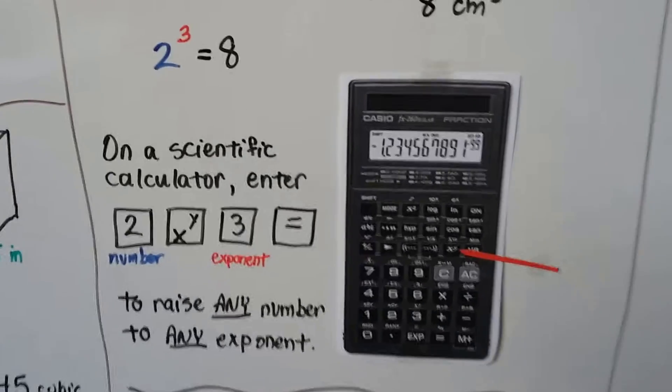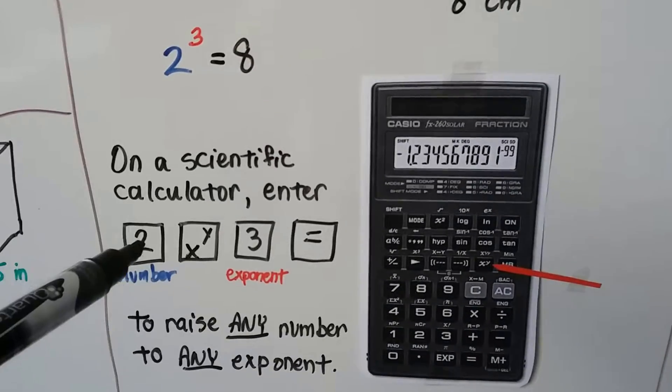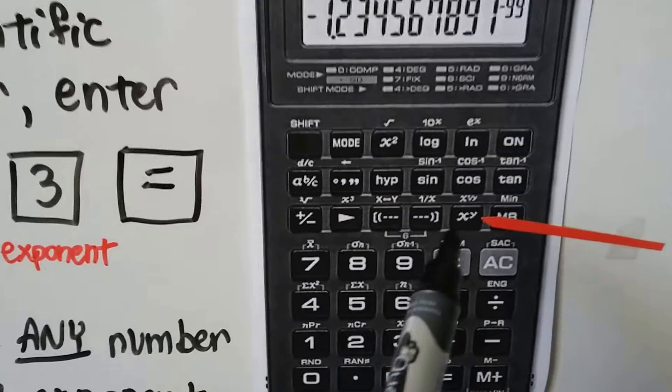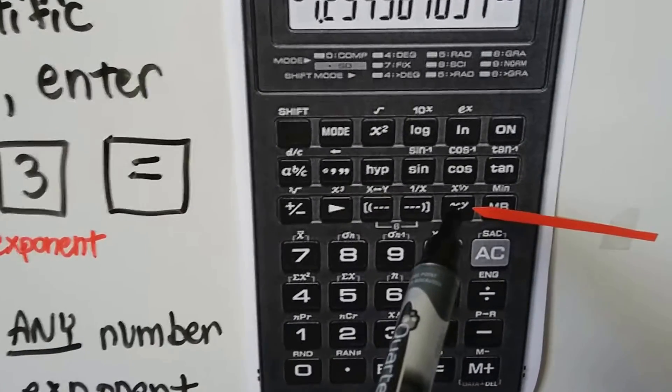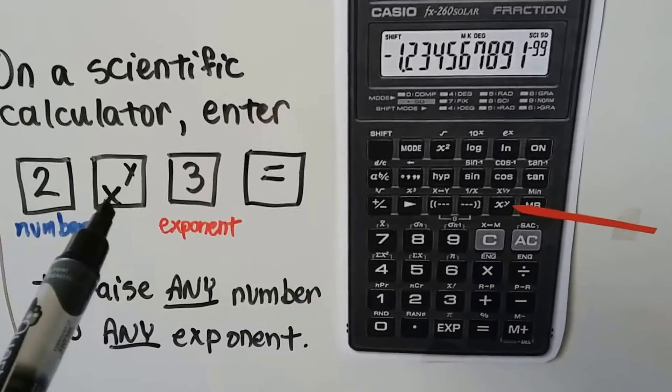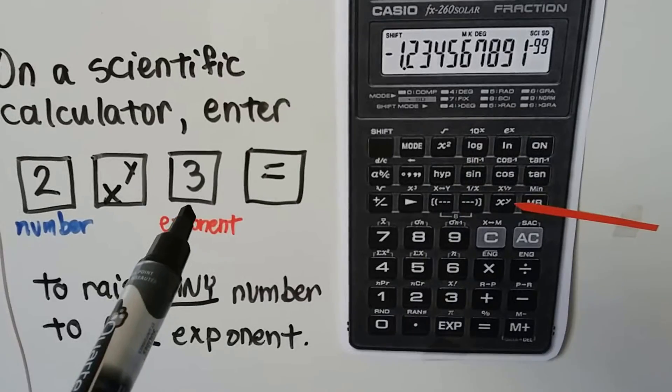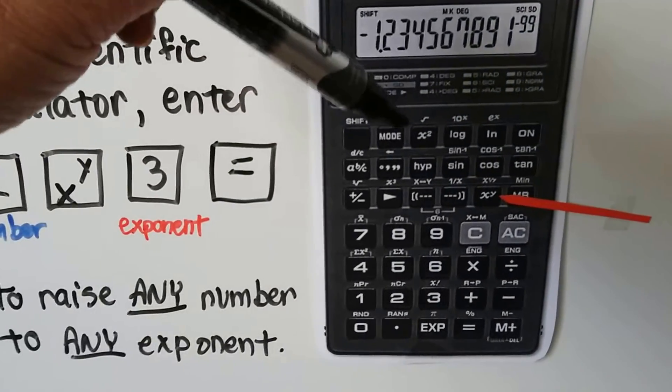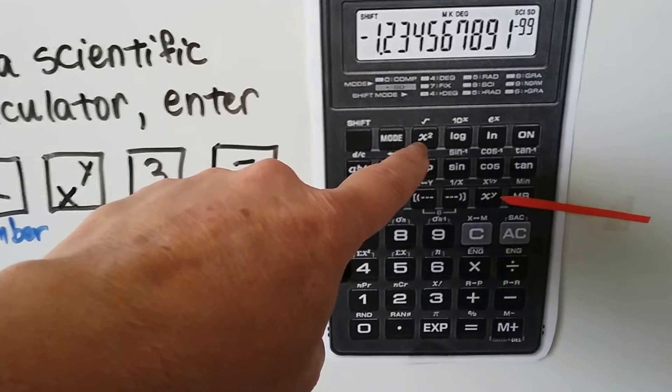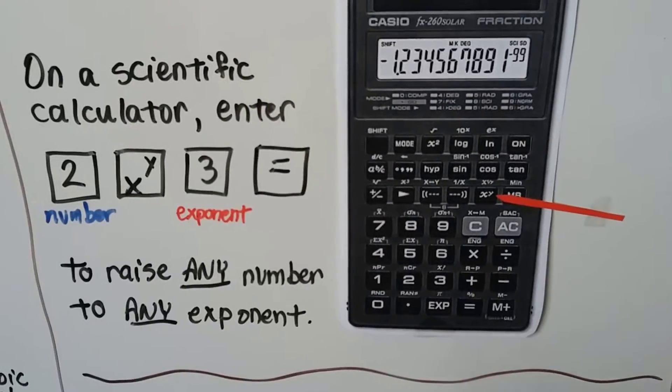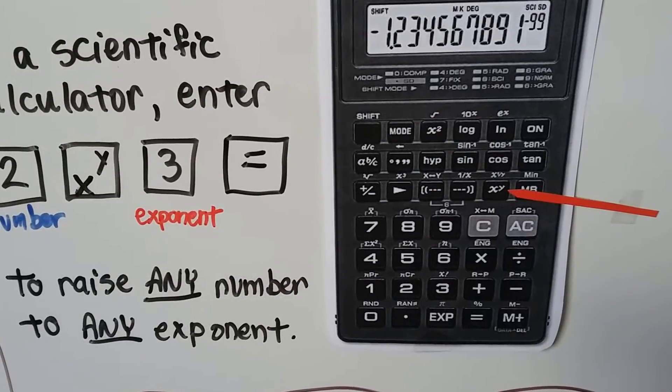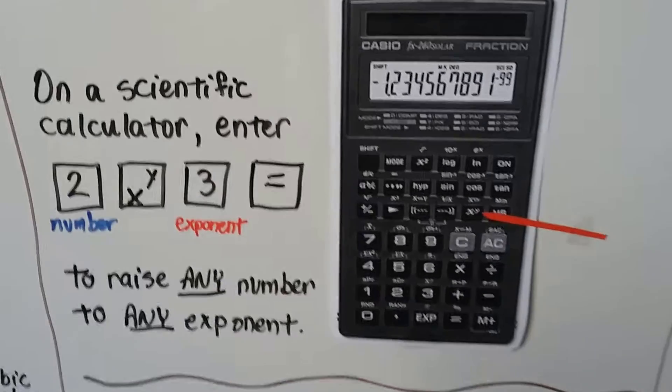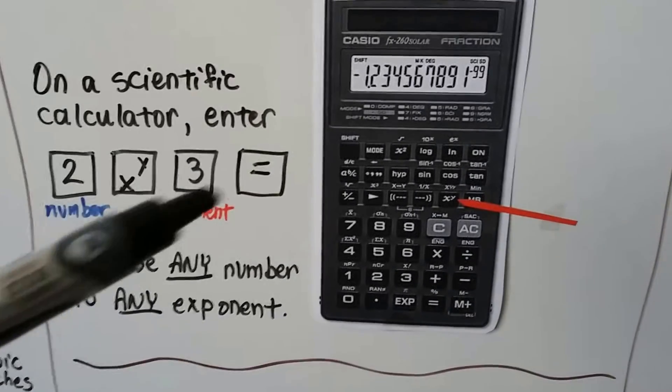On a scientific calculator, all we have to do is enter the number that we're trying to cube. In this case, a 2. Then right here on the GED math test calculator that they're going to let you use, that Casio FX260, there's a little button right here that has an x with a little y exponent. You hit that button, then you put in the exponent you want, then you hit equals. That will raise any number to any exponent. We used this x with a little 2 exponent for square. If you want to do it to some other exponent, you use the x with that little y exponent. You put in the number, you hit the x to the y, you put in the number of the exponent, and hit equals.